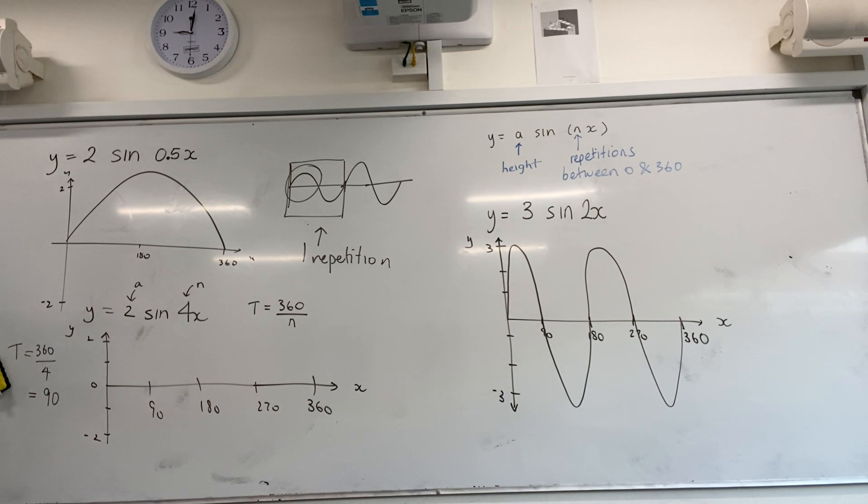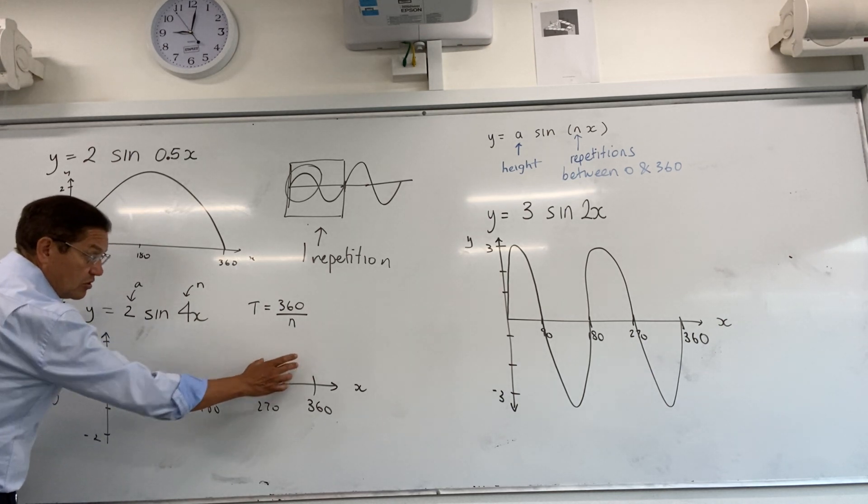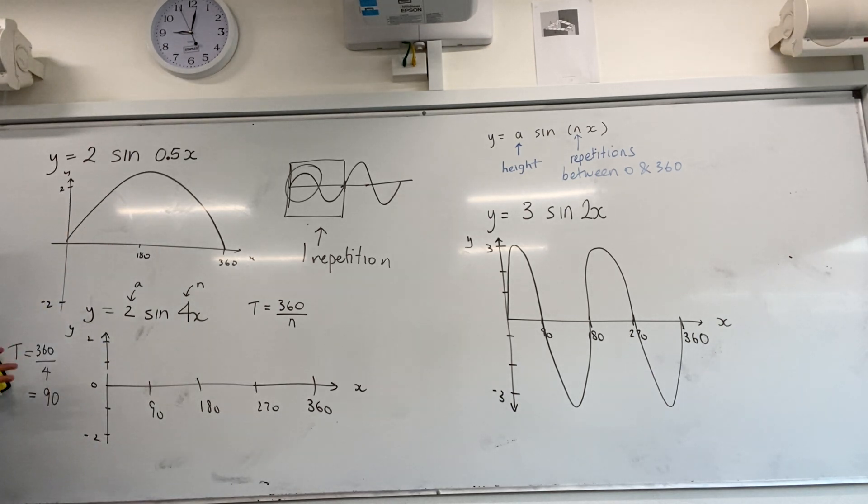But you can actually figure that out for yourselves, because there's got to be four repetitions here between 0 and 360, and they're all exactly the same. You can't have one bigger than the other. So hopefully what happened is you went, hang on, I've got to fit four of these things between 0 and 360. I'm going to divide it into four equal portions.